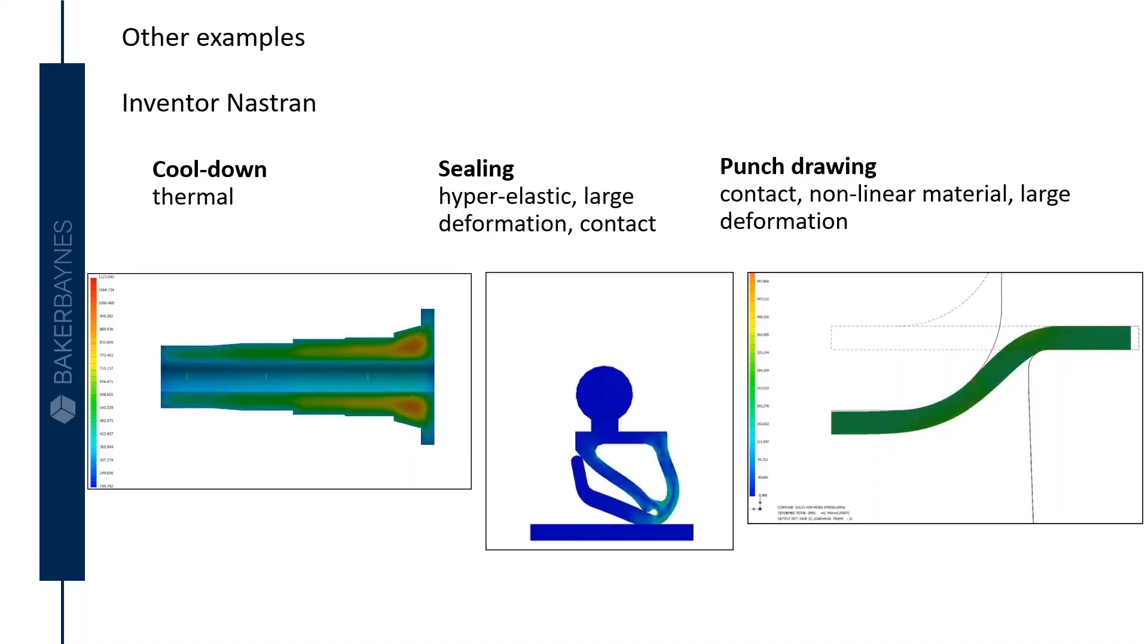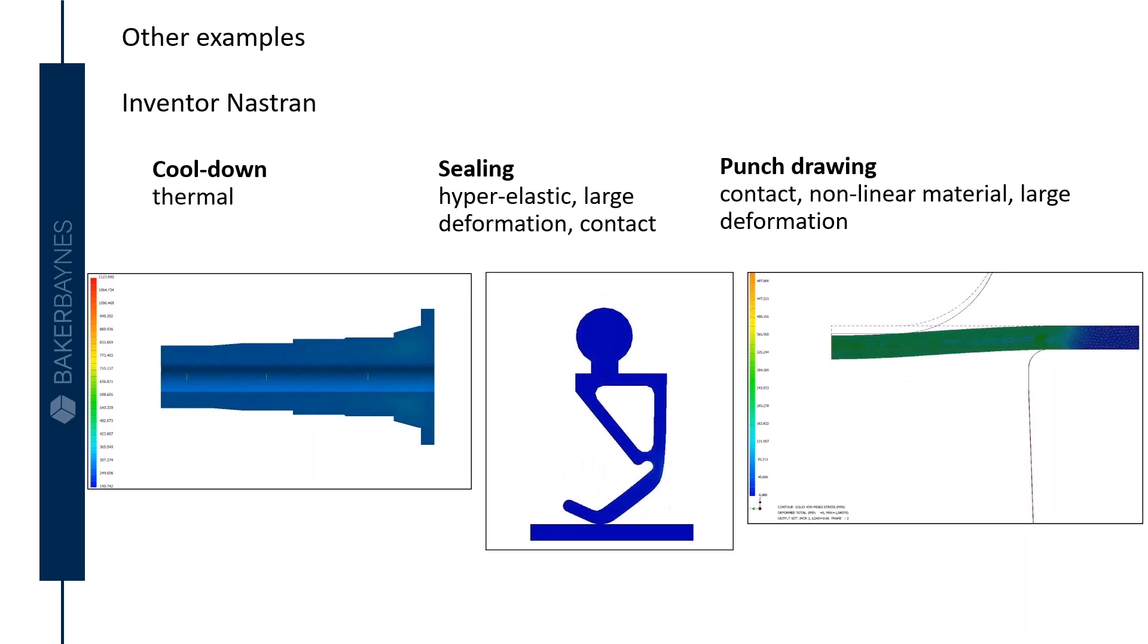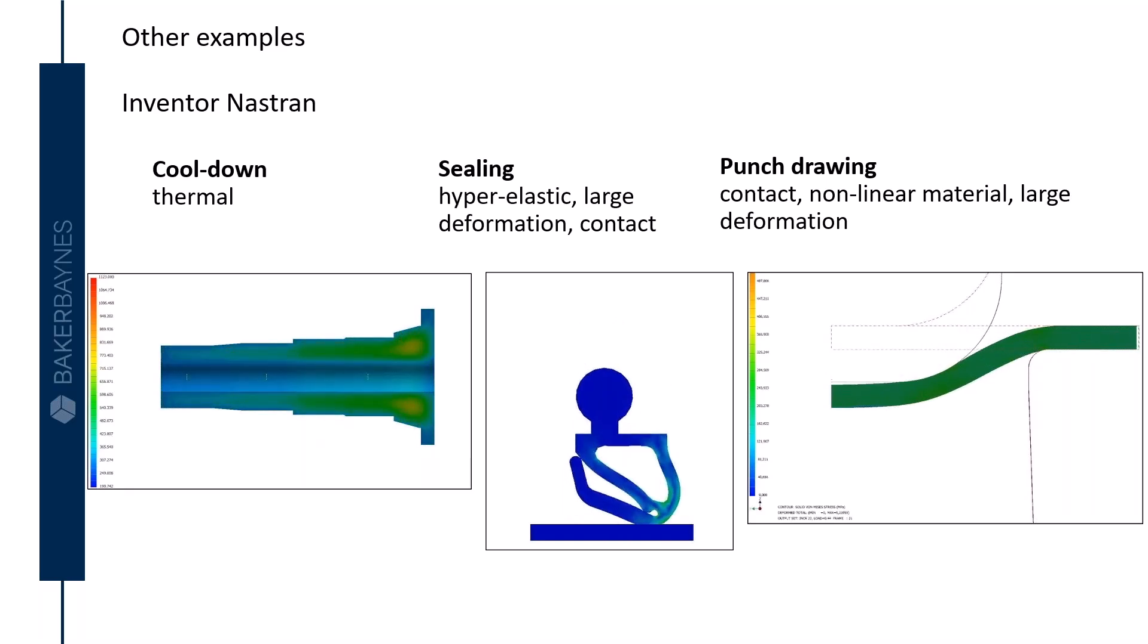On the left-hand side, cool down of a casted part after it was taken out of the mold. How long until its core temperature is below a certain temperature can be determined in here. In the middle screen, a door or window sealing being compressed. Does it seal correctly? Are the stresses too high for the sealing material? And on the right-hand side, it's a punch drawing. How much force to determine to deform the blank? What's the maximum plastic stress that it can take, plastic deformation, within the final part? Would it rip during the deformation process? These are the questions that can be answered by doing a simulation using Inventor Nastran.